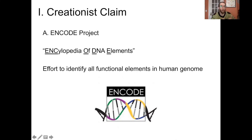ENCODE started publishing papers around 2007, and they made a bit of a splash because they found widespread activity, and they presented this as evidence for widespread functionality within the human genome, which was contrary to the consensus at the time.